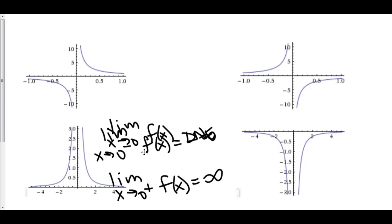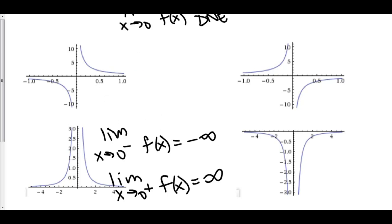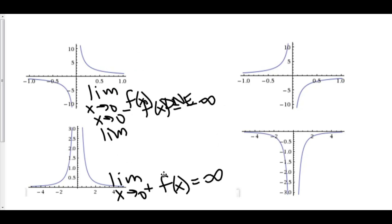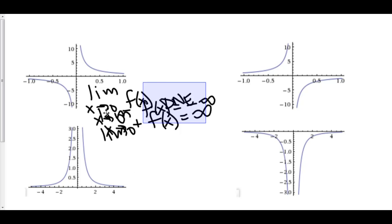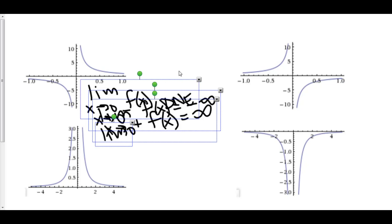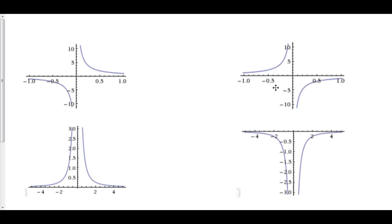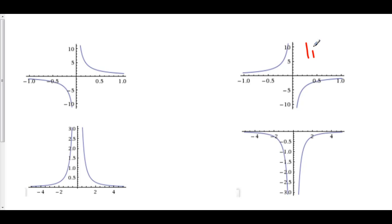Let's talk about the other possible cases that could happen here. Case number two is that the left-hand limit goes to infinity, but the right-hand limit goes to negative infinity. In this example as well, the limit does not exist because the left-hand limit does not equal the right-hand limit.